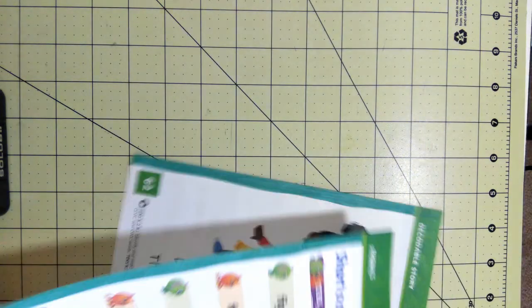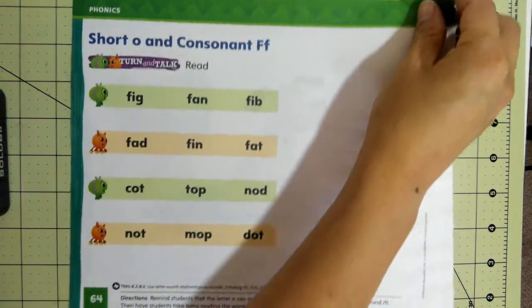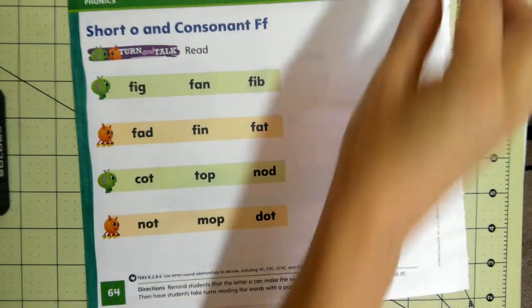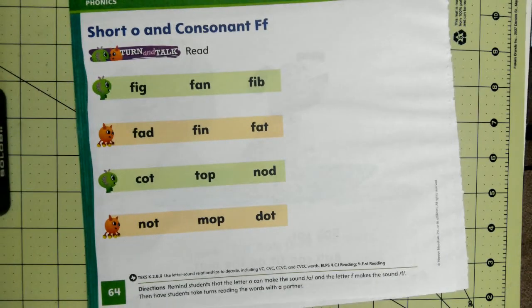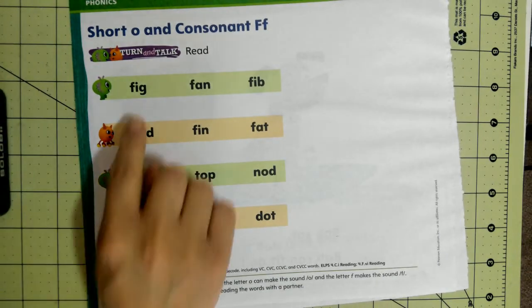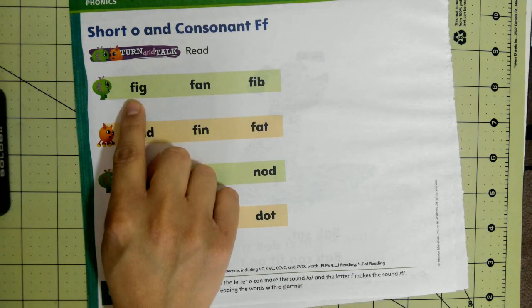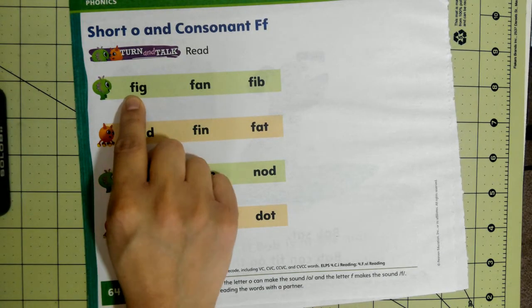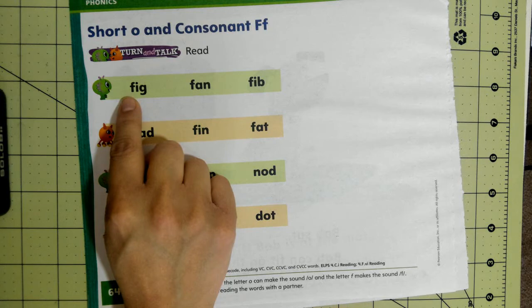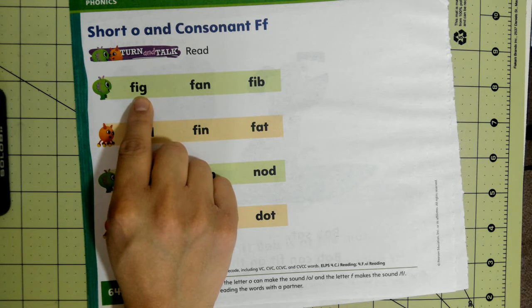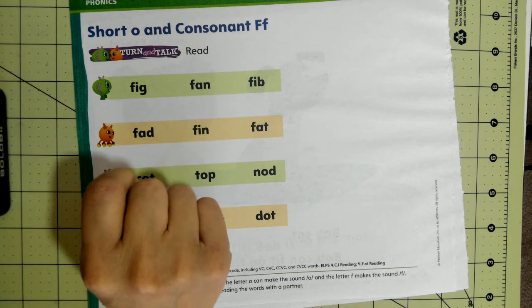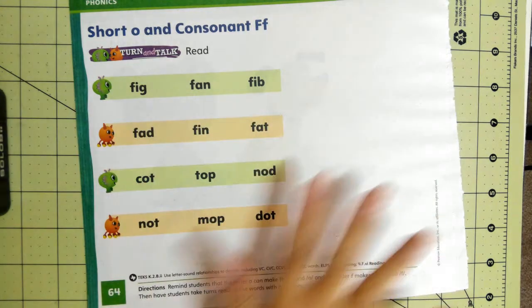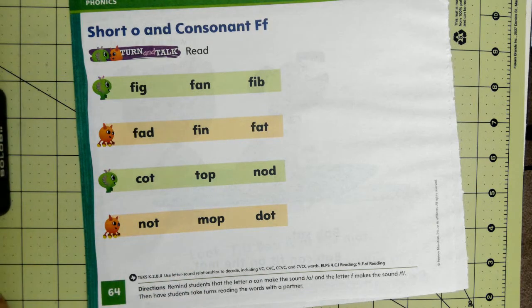On page 64, I want you to practice with somebody at home sounding out and reading the words. We'll do this one together — I'm going to say all the sounds: F-I-G, FIG. You're going to do that for all of the words.